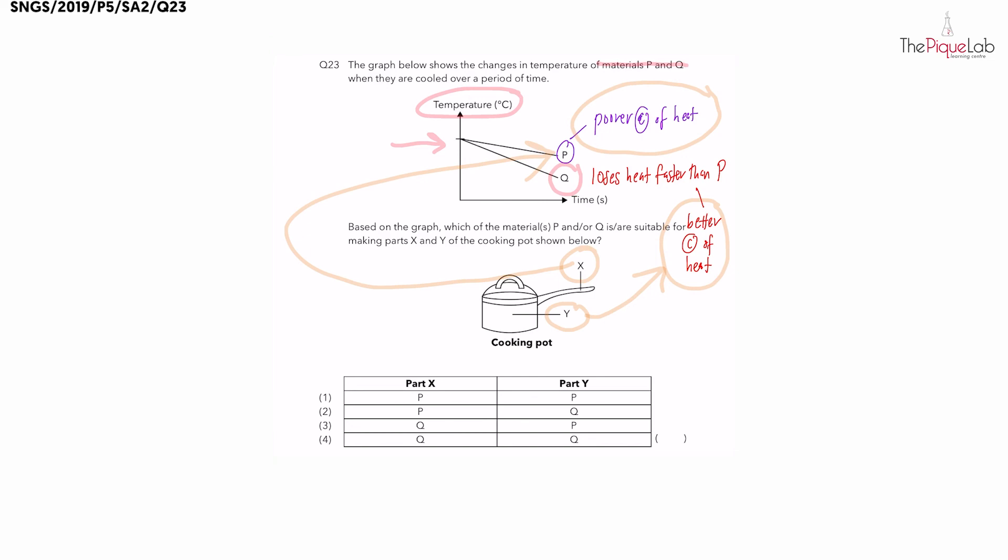So to summarize, part X, the handle, should be made out of material P, while part Y, the cooking pot itself, should be made out of material Q, giving us the answer as option number 2.